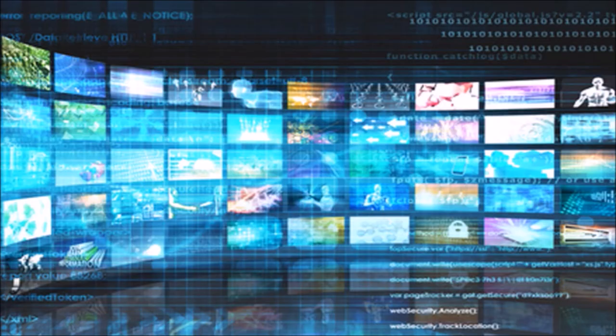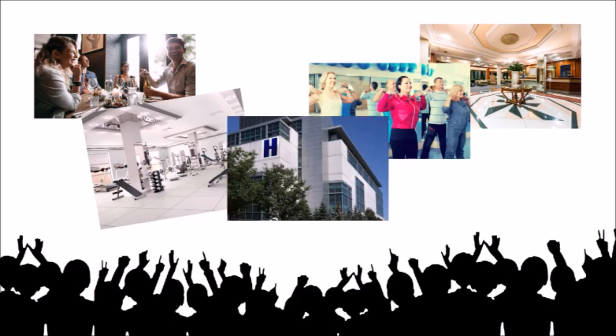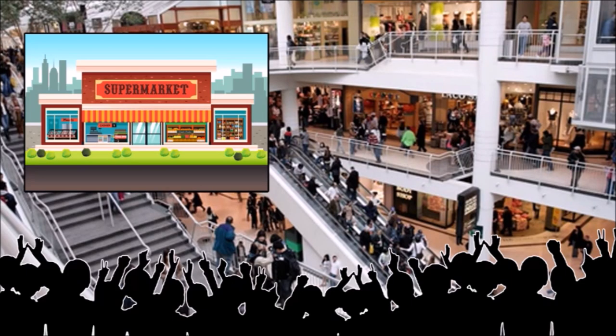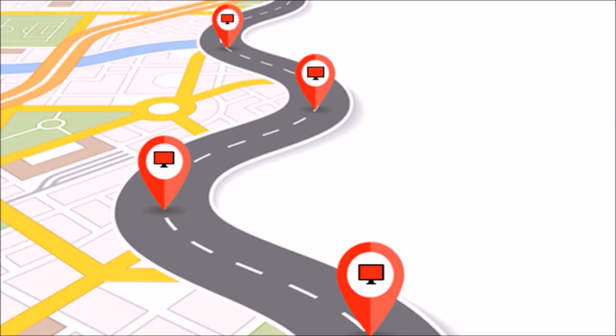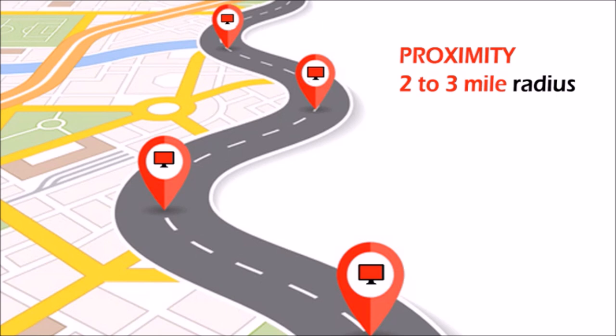Let's use a 10-screen network as an example. First, you need to find 10 high-traffic locations where people dwell for a period of time, such as restaurants, coffee shops, hotel lobbies, gyms and spas, hospitals and clinics, shopping malls, supermarkets and convenience stores, and other such locations — all within a 2-mile radius from one another. Proximity is important, as clients won't advertise in areas they don't serve. Your entire network of 10 screens should be within a 2–3-mile radius.